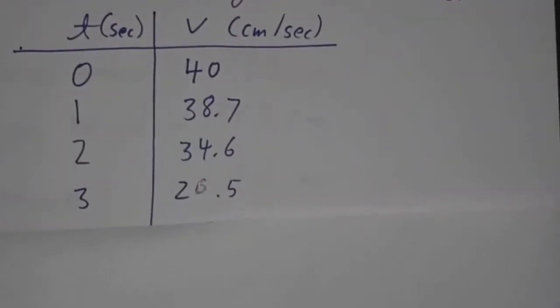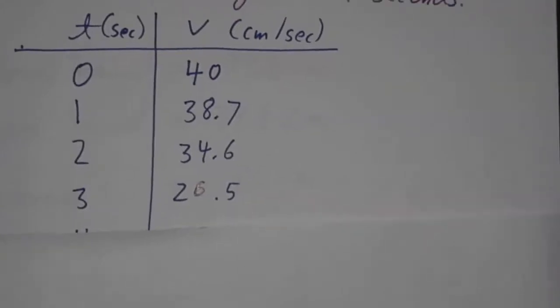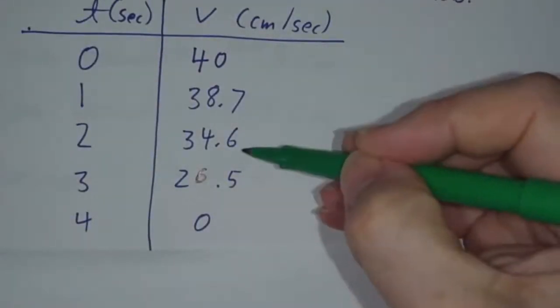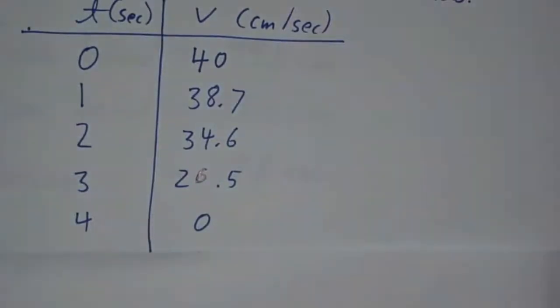We can make a table of how fast it's going at time 0, at time 1, at time 2, at time 3, and at time 4. Based on that table, we're going to try to figure out how far it went.